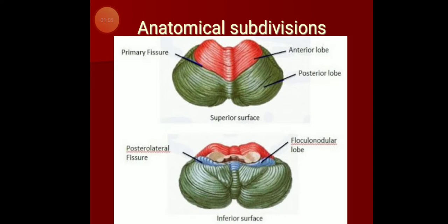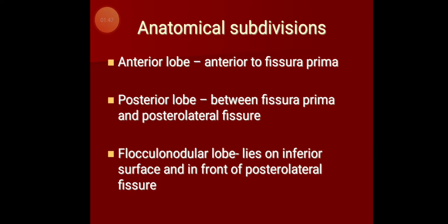Two fissures separate these three lobes. The fissure which separates the anterior from the posterior lobe is fissura prima, otherwise termed as the primary fissure. The fissure which separates the flocculonodular lobe from the posterior lobe is the posterolateral fissure. The anterior lobe is anterior to fissura prima, the posterior lobe lies between fissura prima and posterolateral fissure, and the flocculonodular lobe lies on the inferior surface in front of the posterolateral fissure.